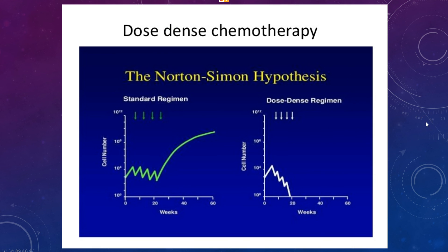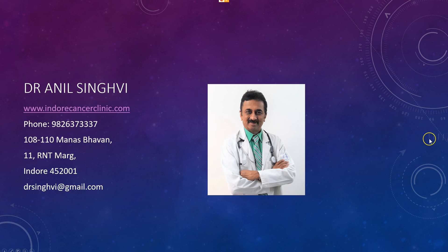This is why we started to use dose-dense regimens, where dosage is given more frequently than the standard interval. In young patients with breast cancer especially, we give a dose-dense regimen, and that is the standard of treatment in most centers all over the world, so that long-term control of the disease is not compromised. The interval and the dose of treatment are both very important and calculated scientifically. There is no such thing as a heavy dose or a light dose — it is the optimum dose that should be given.